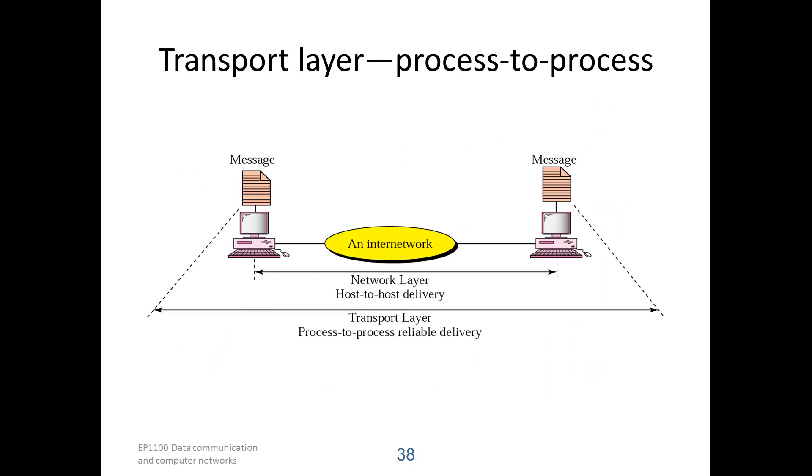Transport layer provides communication between the processes of the end systems. Hence it needs to have its own address so that the receiving computer will know which application it should pass the data to. There are different types of transport layers. There could be reliable communication and non-reliable.